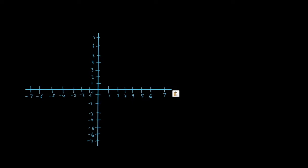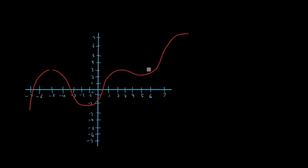What exactly is a limit? I'm going to describe this using a graph. I drew this graph myself so it is a little sloppy looking. Let's say that we have a random function that makes a curve like this. Let's say this is our curve, and let's also say that we have two points on our graph — a point right here and a point right about here.